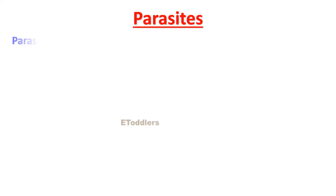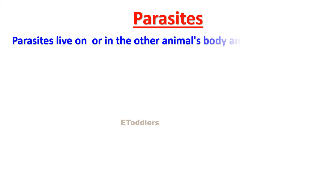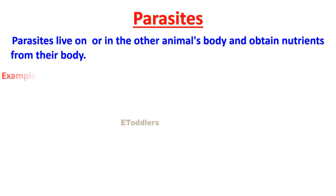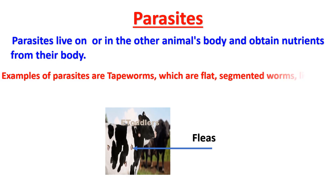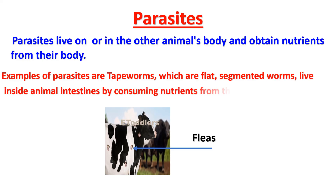Parasites live on or in another animal's body and obtain nutrients from their body. An example is tapeworms — flat, segmented worms that live inside an animal's intestine by consuming nutrients from the host.